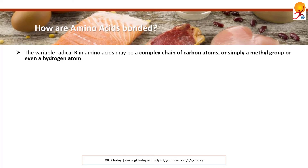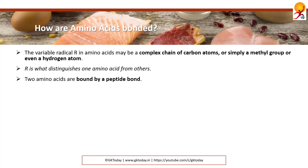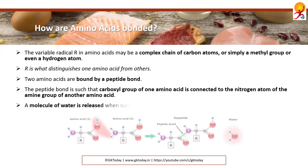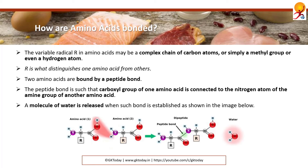How are amino acids bonded? The variable radical R may be a simple hydrogen atom, a complex chain of carbon atoms, or even a simple methyl group. R is what distinguishes amino acids from each other. Two amino acids are bound by a peptide bond, where the carboxyl group of one amino acid is connected to the nitrogen atom of the amine group of another — one carbon to one nitrogen. A molecule of water is released when such a bond is established.